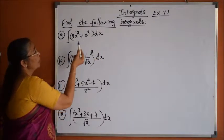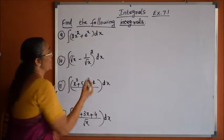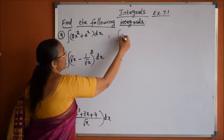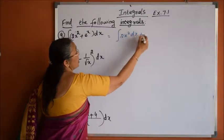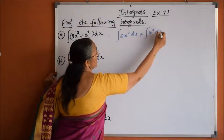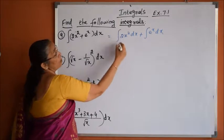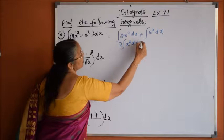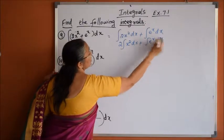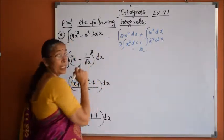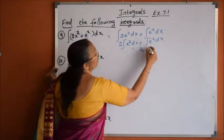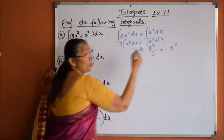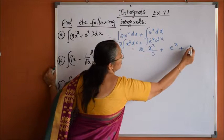Integration of 2x² + eˣ dx. First, split this integration into integration of 2x² dx plus integration of eˣ dx. Take 2 as a common outside coefficient: 2 times integration of x² dx plus integration of eˣ dx. We get 2 into x³/3 plus eˣ plus constant c.